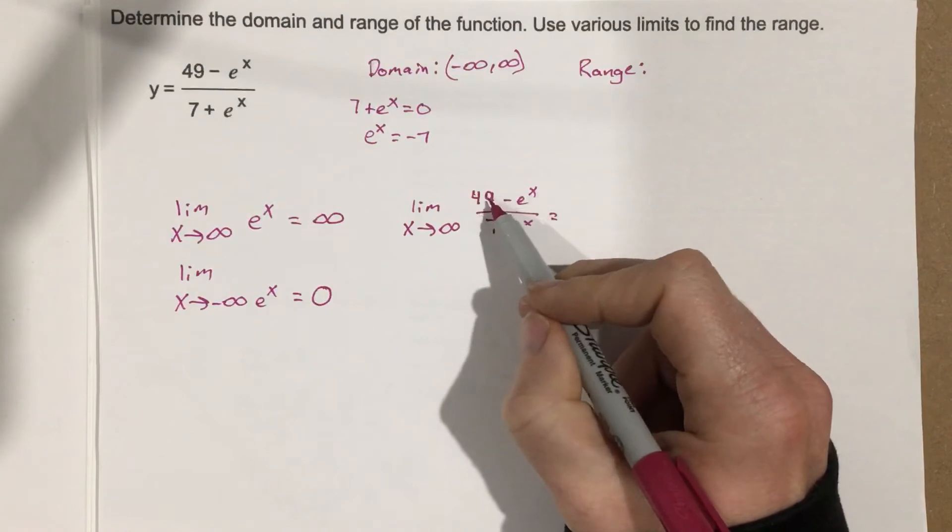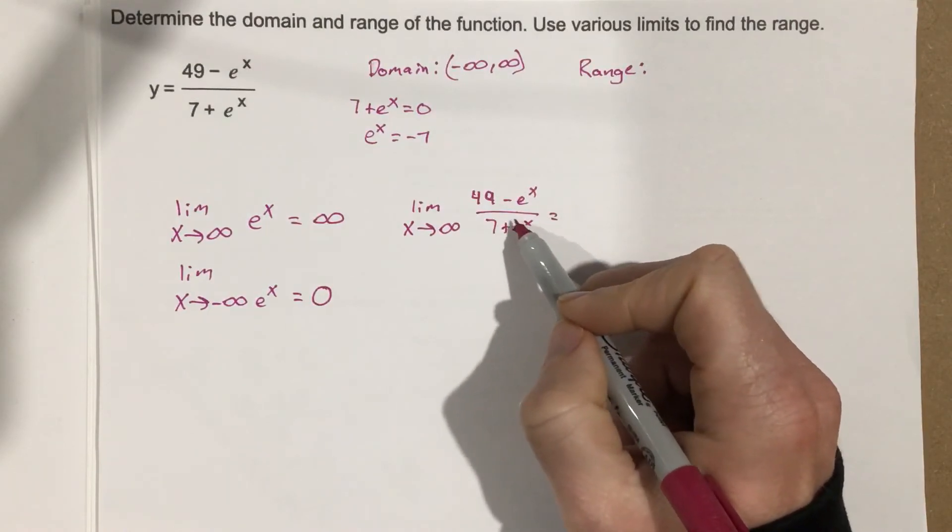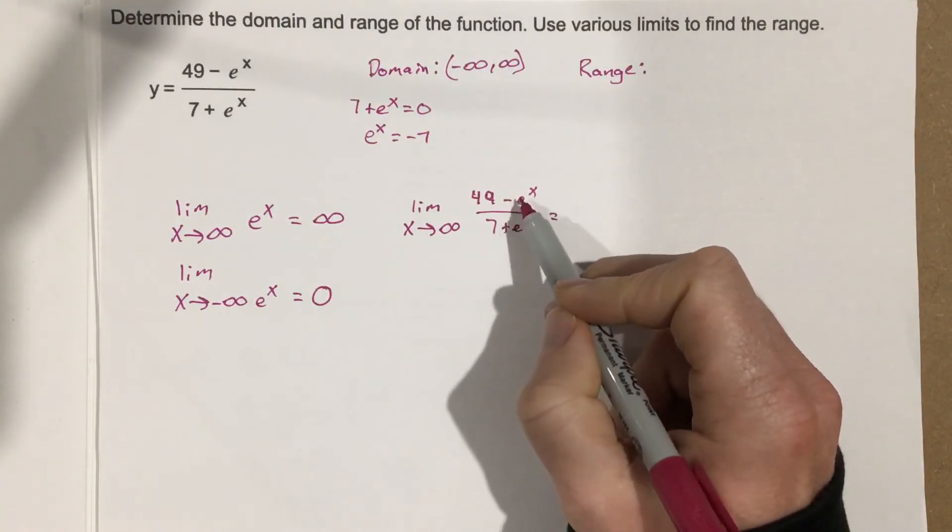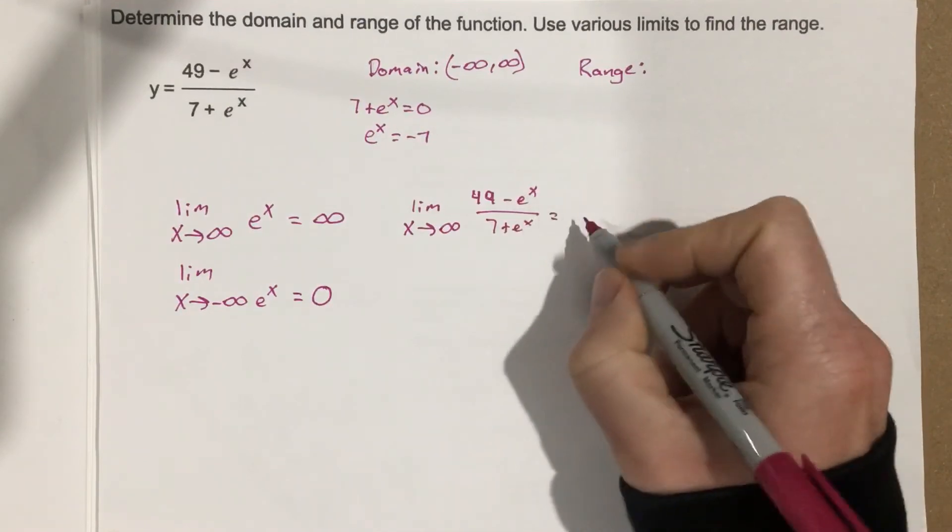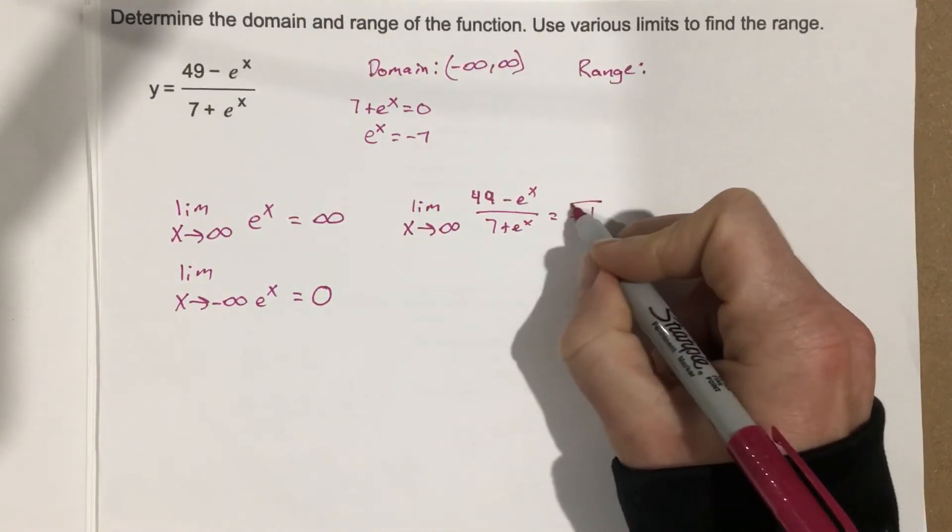So essentially, we're getting close to this negative 1 number because this is just going to be a really, really large negative number. And this is going to be a really, really, really, really large positive number. And those two numbers are going to be pretty close to each other. So this actually is just negative 1 for a limit.